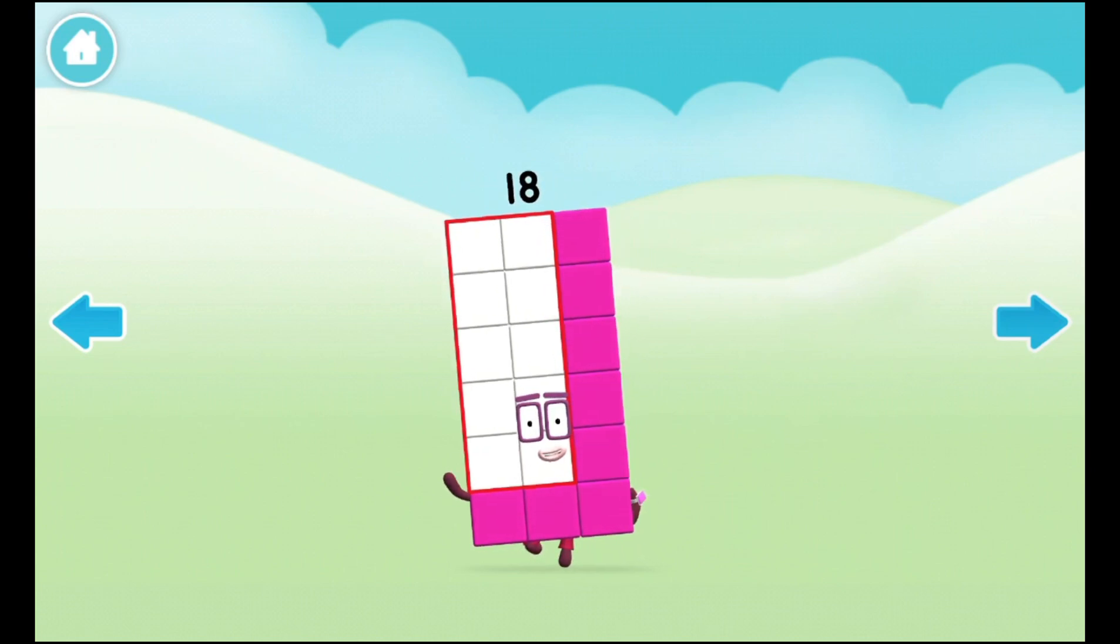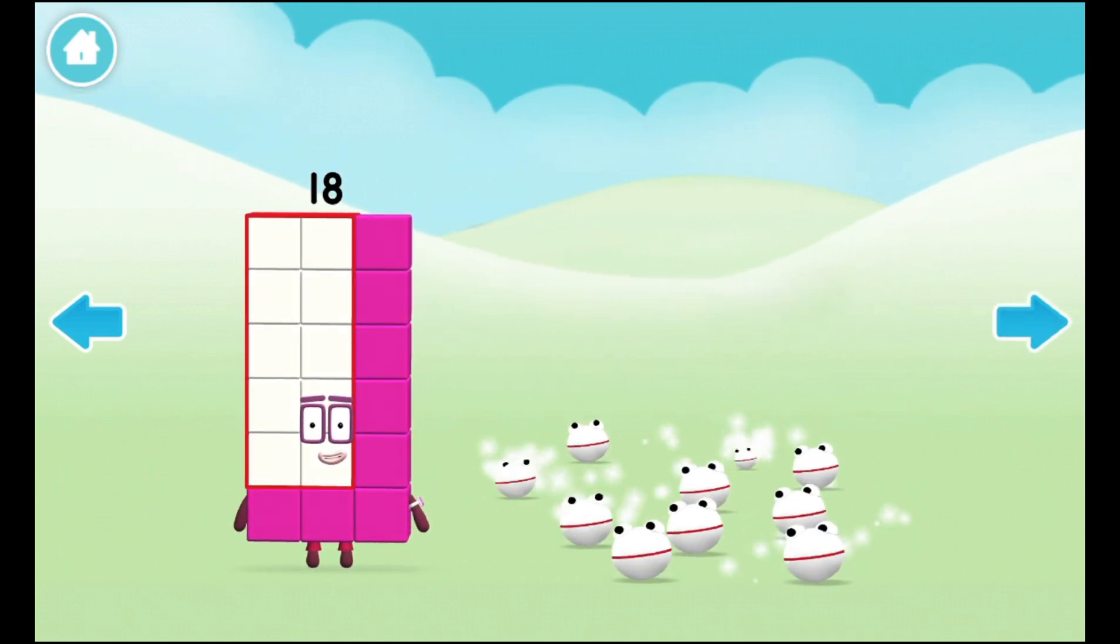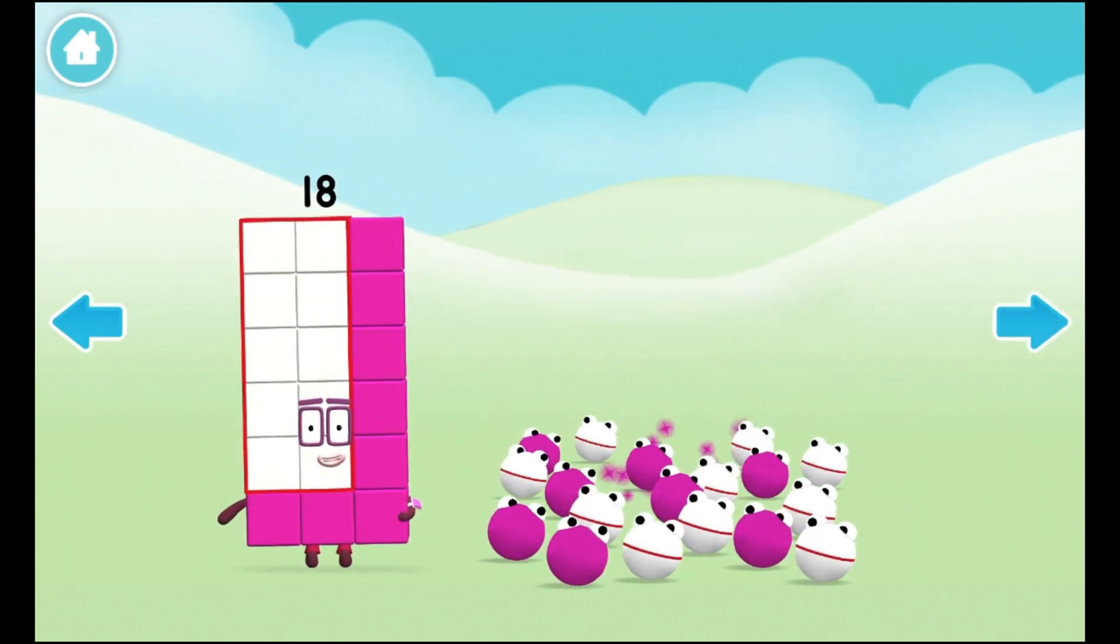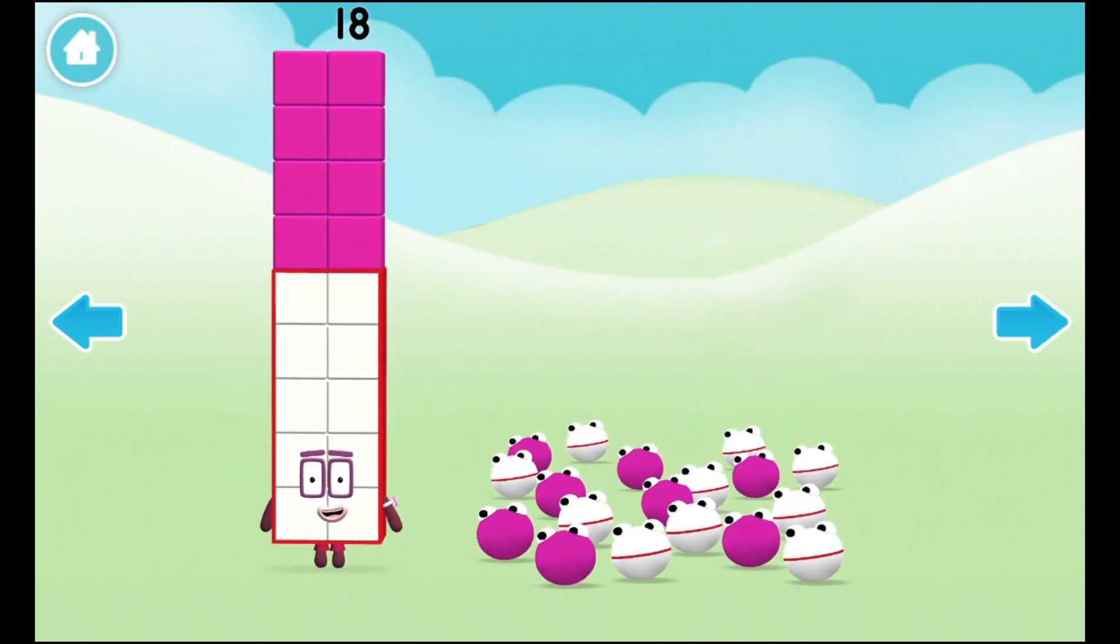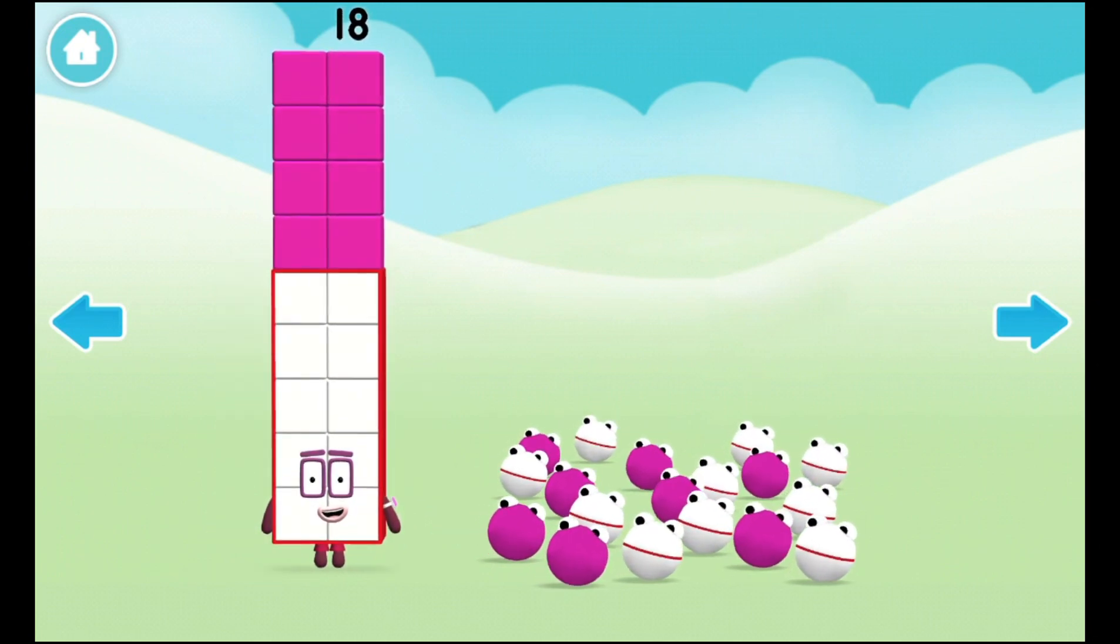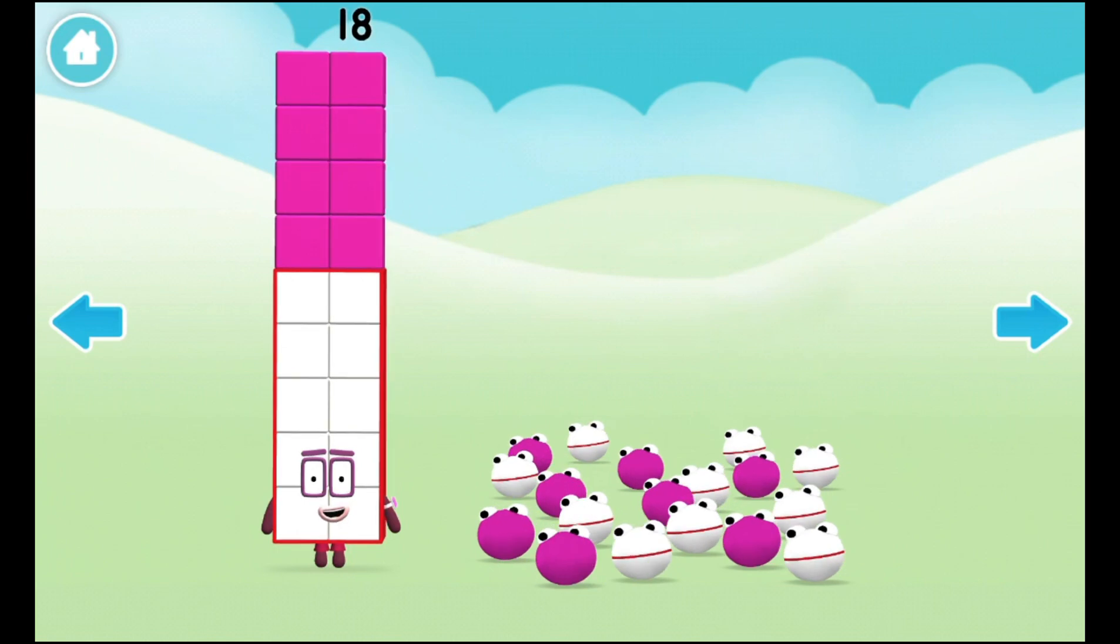And on his farm he had some ducks. E-I-E-I-O. With a quack here and a quack there. Refreshing. Old MacDonald had a farm. E-I-E-I-O. I am eighteen. And I am a super speedy super rectangle.